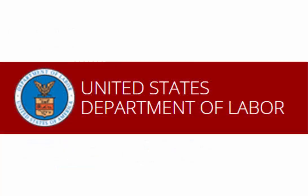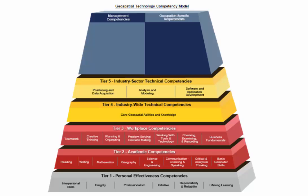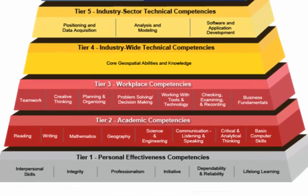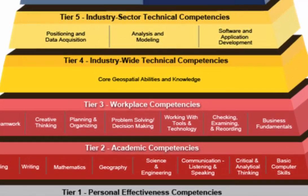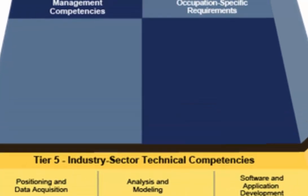The United States Department of Labor sees the potential of QGIS to provide jobs and to make GIS accessible to whole new areas of the economy. They have funded Del Mar College in Texas to produce curriculum to help people learn QGIS and the GIS concepts on which QGIS is based. Over 2,000 GIS professionals contributed to a study to determine which skills a GIS professional would need, and all of this has gone into the development of the courses produced by Del Mar College.